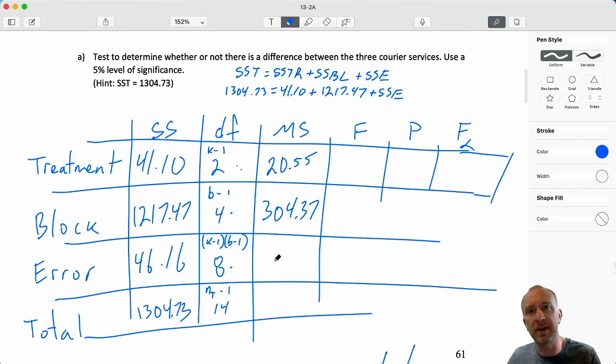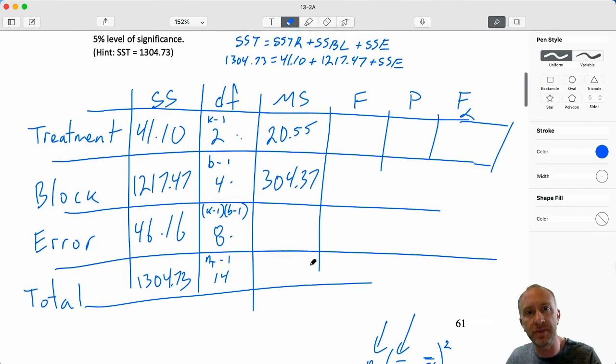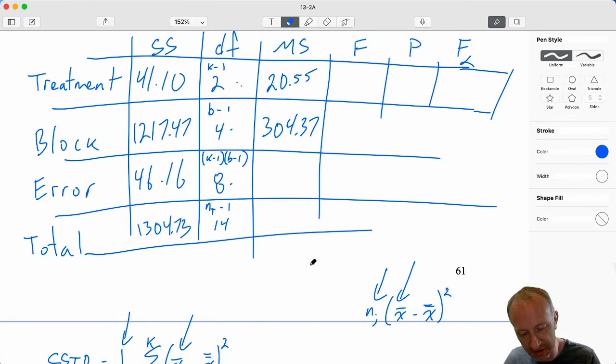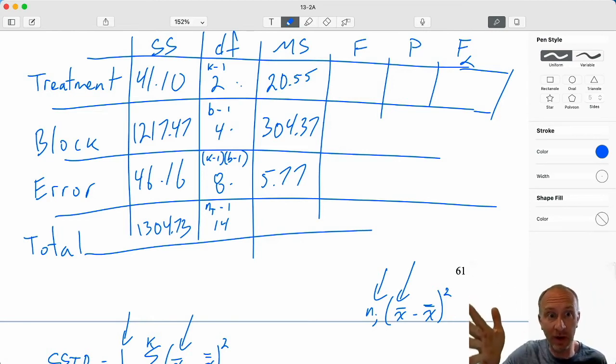Okay. Lastly, I still need my mean squared error. This is, again, the same calculation. I'm going to divide sum of squares error, 46.16 divided by eight. All these calculations, they're the same as what we did in the completely randomized ANOVAs in module 13-1. All of those calculations are the same. Sums of squares divided by degrees of freedom. And those all give you these estimates of the variance.